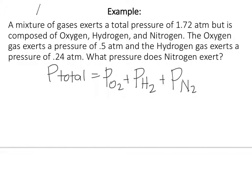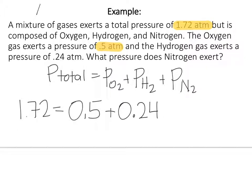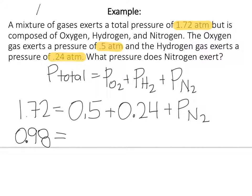Now that you've worked a bit, let me remind you of Dalton's Law. Our total is 1.72 atm. Our pressure of oxygen is 0.5 atm. Our pressure of hydrogen is 0.24 atm. And we're looking for our pressure of N2. So the pressure of N2 is going to be our total minus the sum of oxygen and hydrogen partial pressures. That gives us 0.98 atm for the partial pressure of N2. Remember, pN2 means the partial pressure of N2, and N2 is just how nitrogen gas is formed.